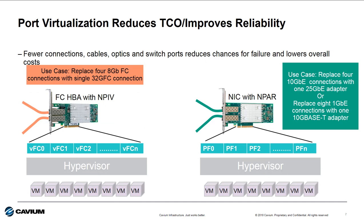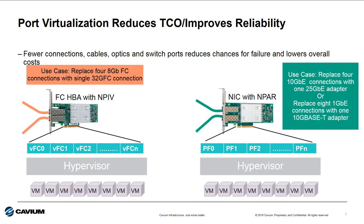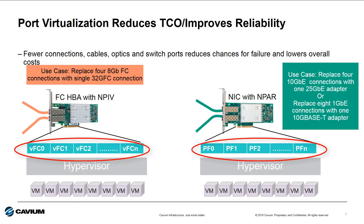Intelligent Fiber Channel and Ethernet adapters support virtualizing the physical port and make a single adapter appear as multiple adapters to the OS. For Fiber Channel, this is done with NPIV, and for Ethernet, the NPAR feature enables the virtualization. By virtualizing the physical port, administrators have full control of the bandwidth and priority for each of the virtual functions, providing multiple dedicated networks for the OS.